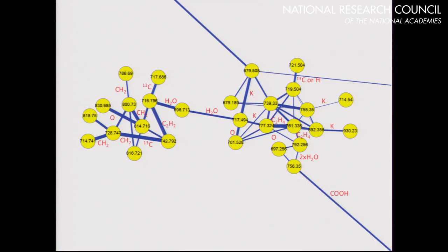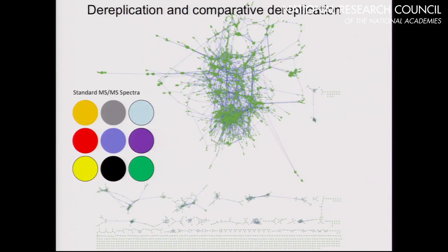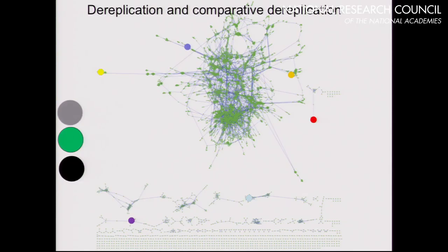I'm actually trained as a chemist, and so I see a lot of chemistry here. When I zoom in, it immediately screams to me that these molecules are probably related. A 14 Dalton difference is probably a methyl group; a 16 Dalton difference is probably an oxygen. So if we know what one molecule is, we can often begin to propagate many of these annotations.